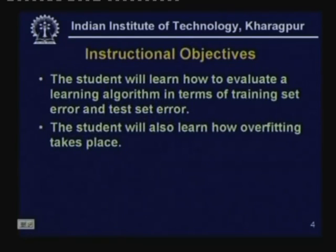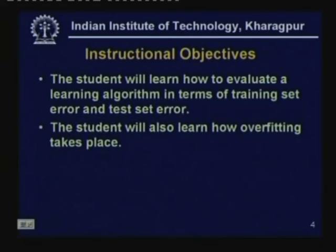Later we will also review how learning algorithms are evaluated in terms of the training set error and test set error. We will also show how overfitting occurs in decision trees and in a later class we will look at how overfitting can be avoided in decision trees.